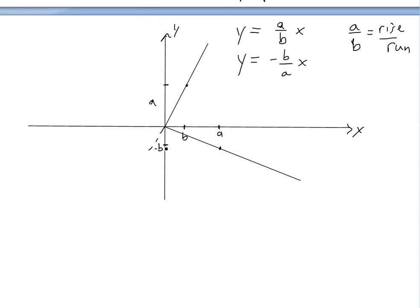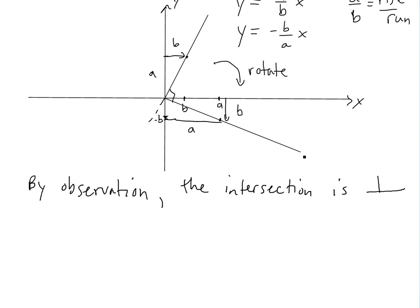Now if you look at these two lines — imagine this was the y-axis. All we did was shift this by b, and then shift x down here by b, because this is just b. So all we did was rotate. We never actually changed where the slopes were. So if the original axes were perpendicular — the y and x — this is also perpendicular. Just by observation, the intersection is perpendicular. All we're doing is rotating this perpendicular axis. So that's all the proof there is.